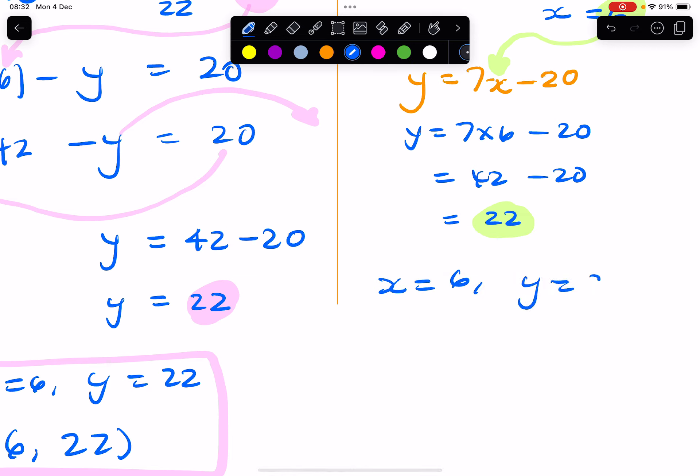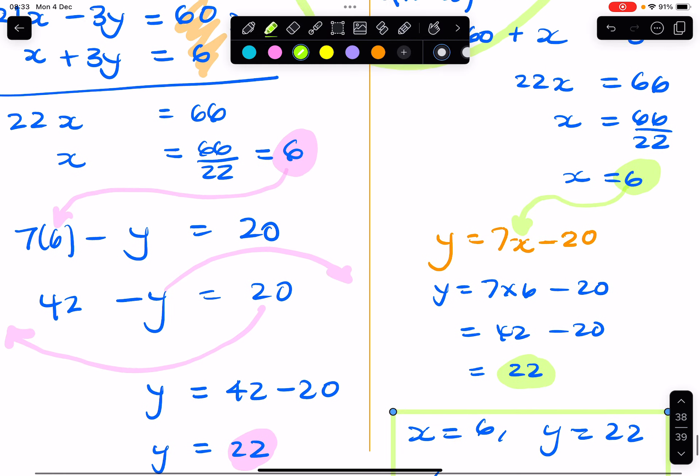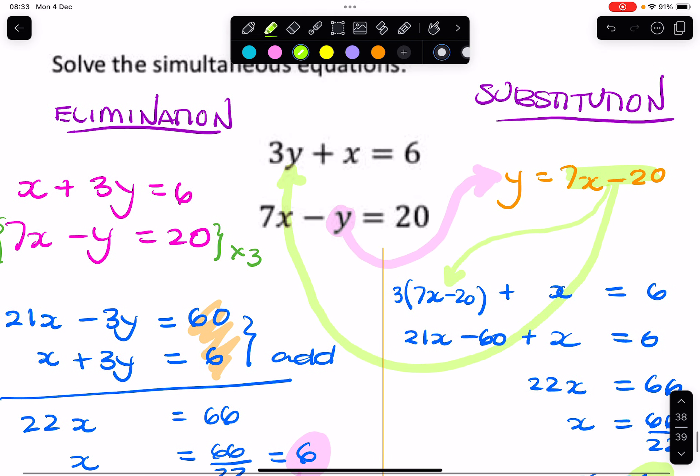y equals 22, or you can write it as a coordinate pair: (6, 22), x comma y. So that's how you would solve this by substitution.